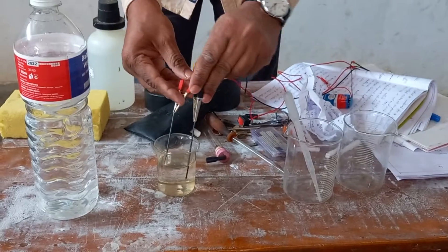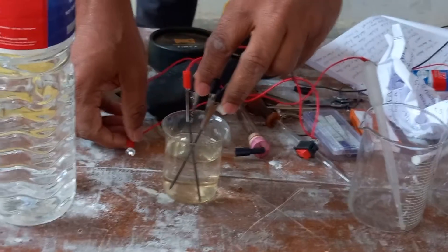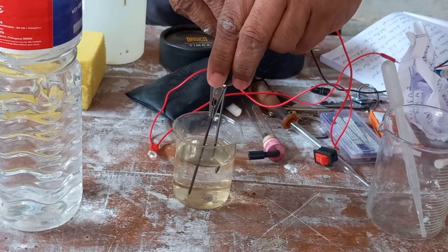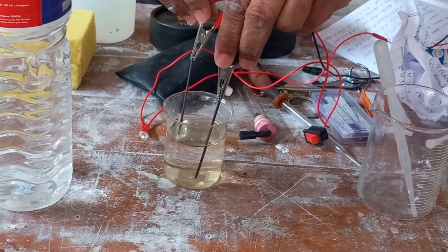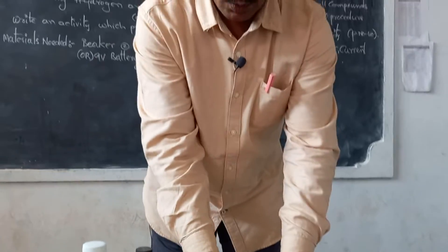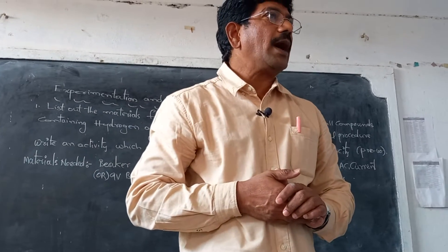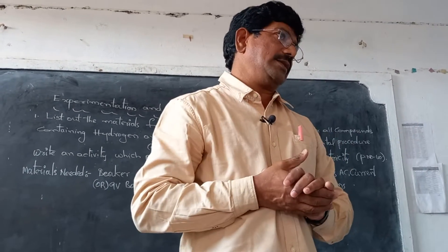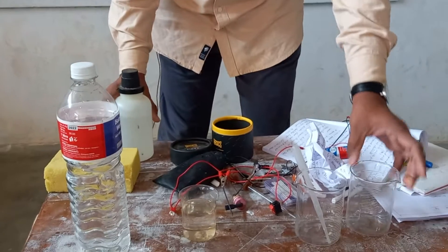Observe this — the bulb is not glowing. The bulb is not glowing. Why is the bulb not glowing when I have taken distilled water? Because there are no ions — there are no ions. Are you clear?